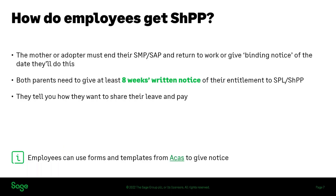How do your employees get shared parental pay? The process works by the mother or adopter notifying you that they are ending their SMP or SAP and either returning to work — where the partner will perhaps take over and take the shared leave — or they've given you binding notice of the date they will end their maternity or adoption. From that point, they can start to use shared parental leave and pay for the remaining entitlement, but they will need to give you at least eight weeks' written notice of their entitlement and when they intend to take it. It is down to the parents to work out how they want to share that remaining leave and pay.